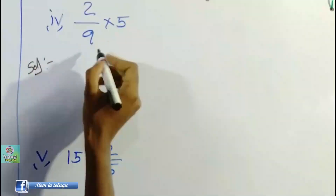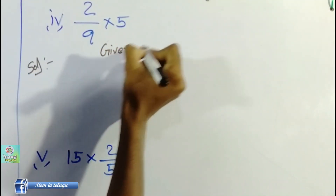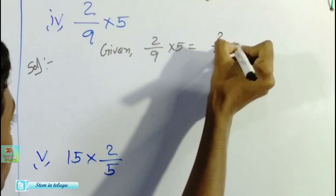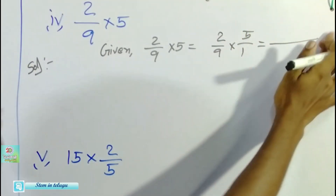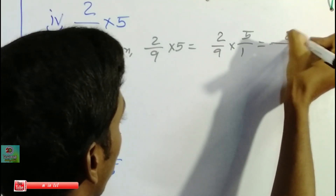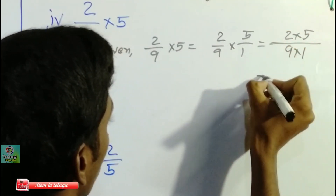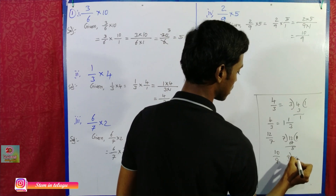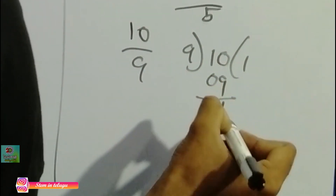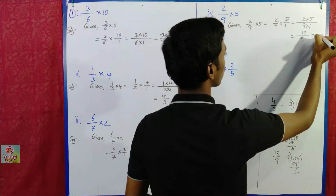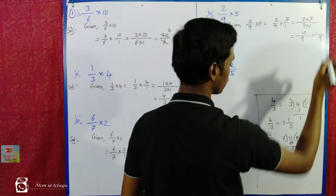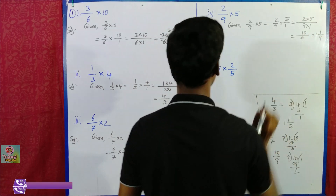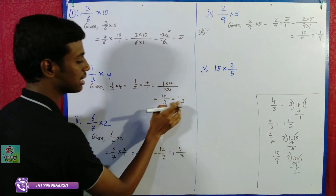Next, given: 2 by 9 into 5. That is 2 by 9 into 5 by 1, which equals 2 into 5 over 9 into 1 equals 10 by 9. Converting 10 by 9: 9 goes into 10 once with remainder 1, so the answer is 1 and 1 by 9.